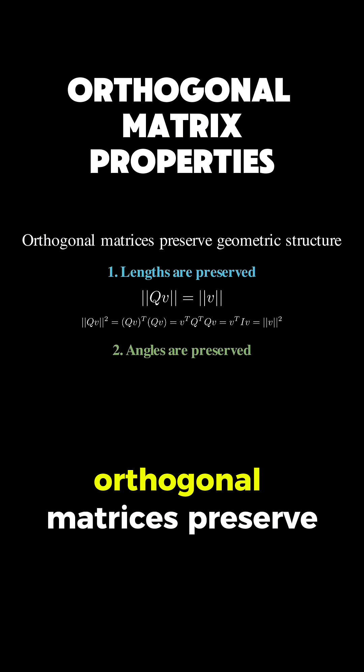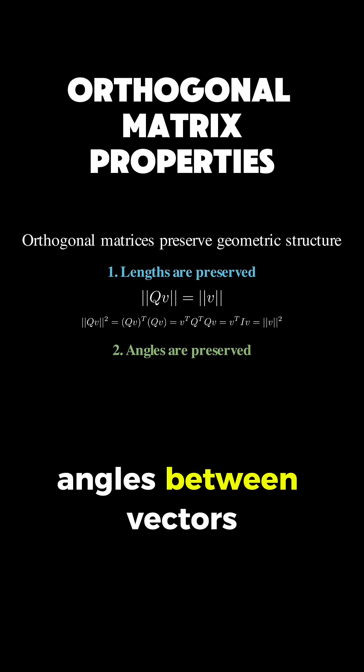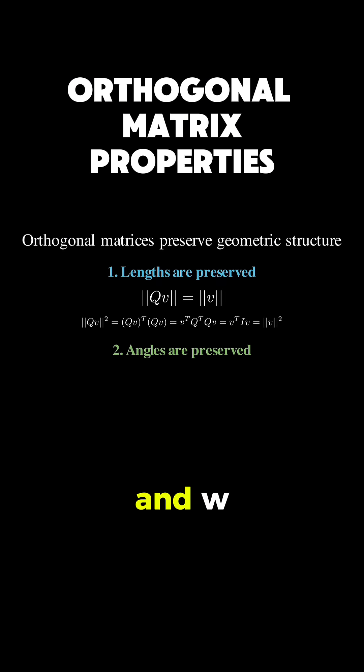Second, orthogonal matrices preserve angles between vectors. If we have two vectors v and w, then the dot product of Qv and Qw equals the dot product of v and w.